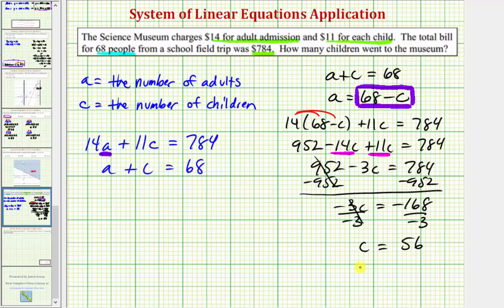So now we do know enough information to answer the question. We know 56 children went to the museum. Let's go ahead and finish off and solve this system.